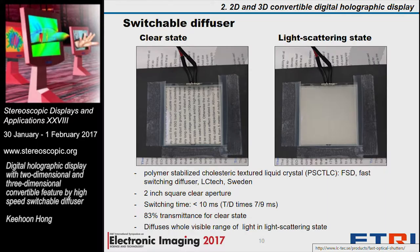For the experiment, a PSC-TLC is used for the switchable diffuser. It has a clear aperture of 2-inch square and a switching time of less than 10 milliseconds, which is quite fast. In its clear state, the transmittance is over 83%, and in the light scattering state it effectively diffuses across the whole visible region of light. These two pictures show the clear state and light scattering state of those materials, confirming they can be used properly as a switchable diffuser.